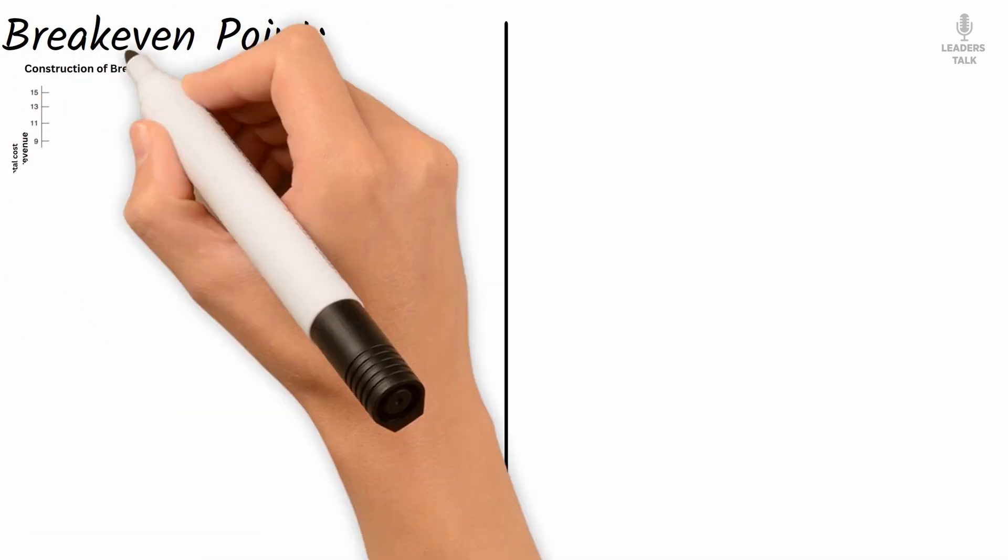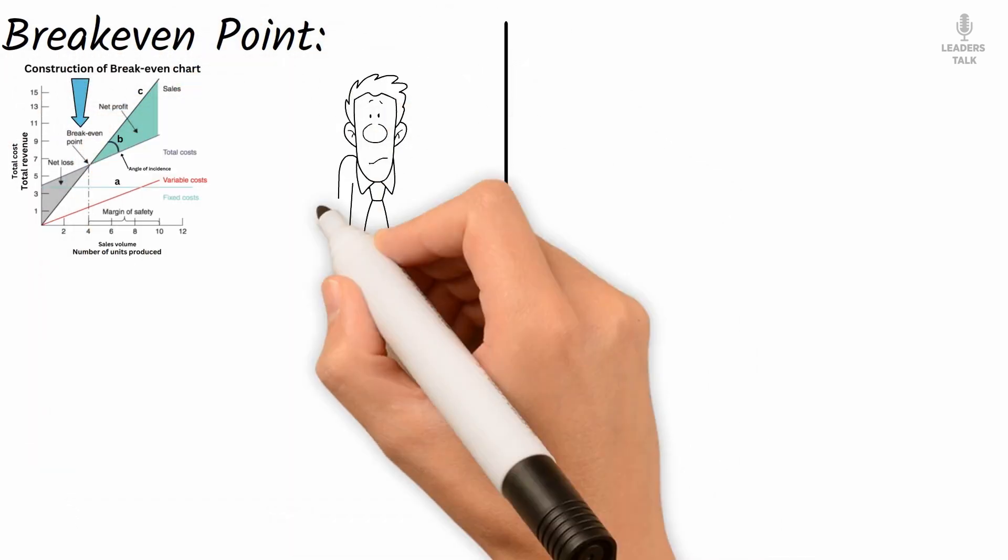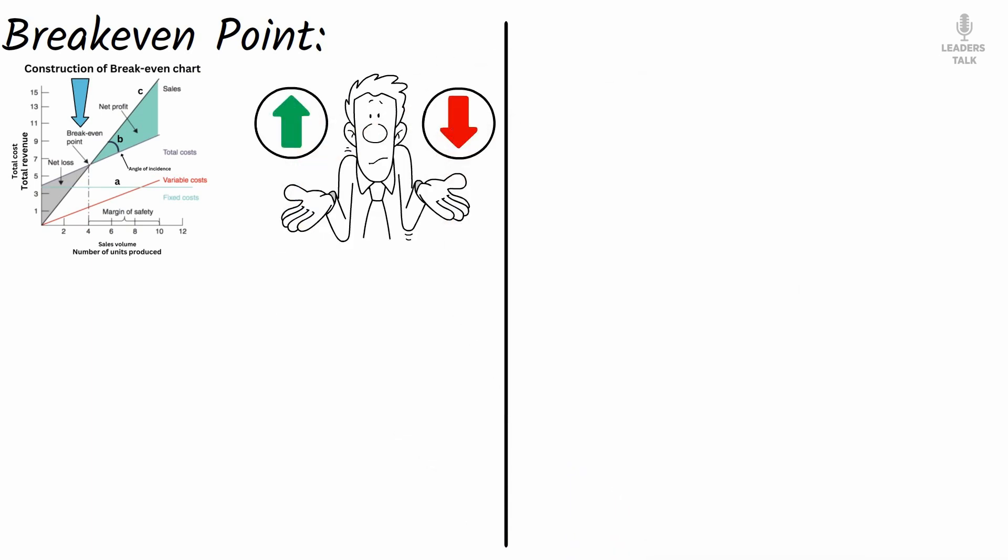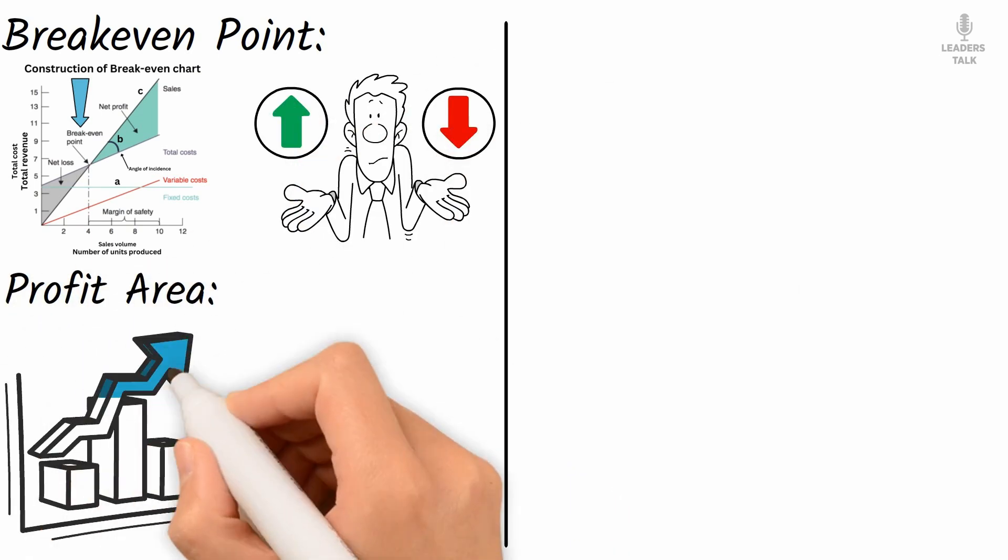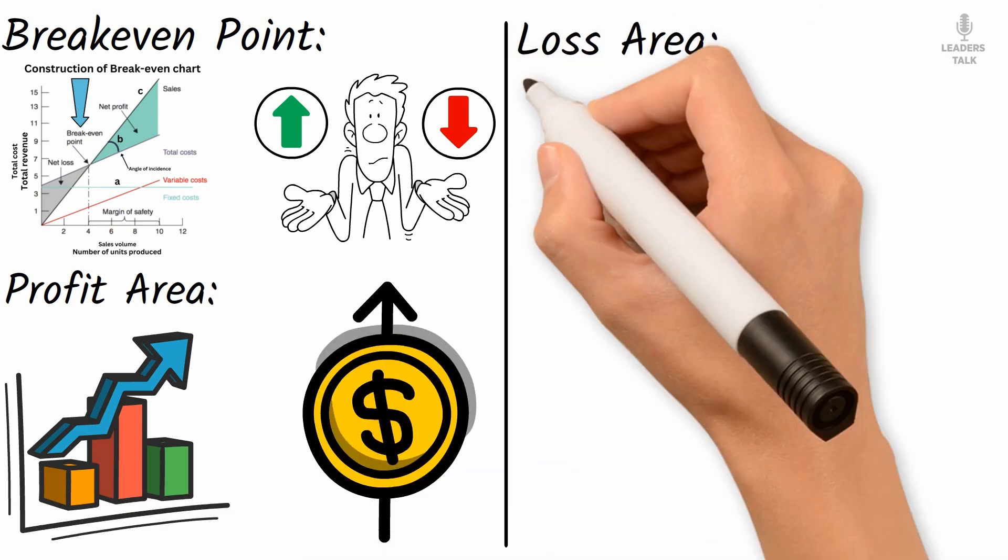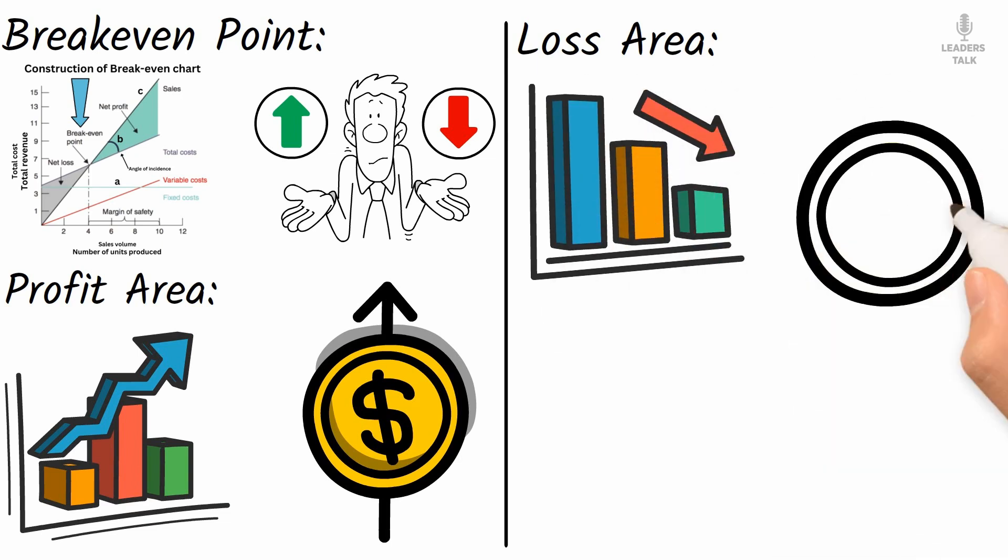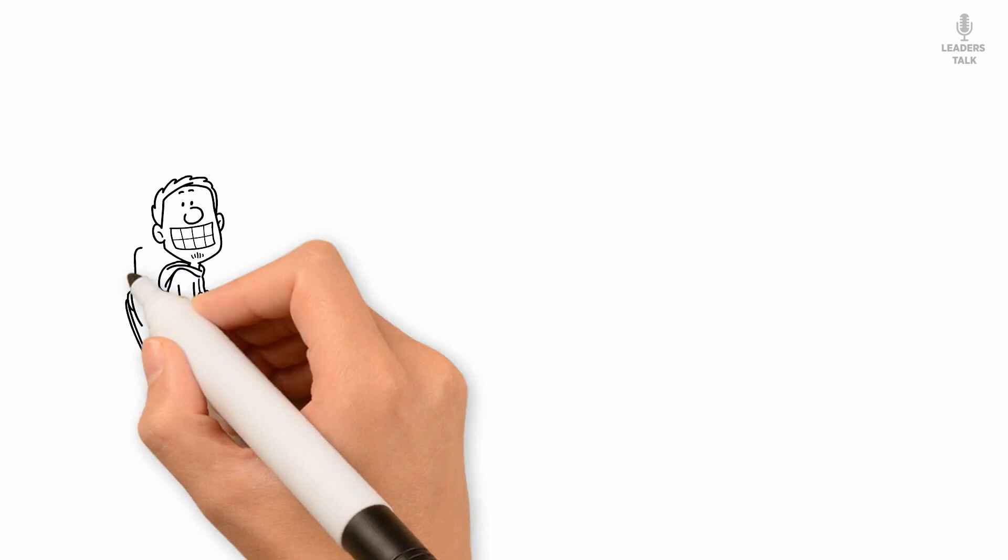Breakeven point: the point where the total cost line intersects the revenue line. This indicates the level of sales at which the company neither makes a profit nor incurs a loss. Profit area: the area above the breakeven point where revenue exceeds total costs, signifying profit. Loss area: the area below the breakeven point where total costs exceed revenue, signifying a loss.